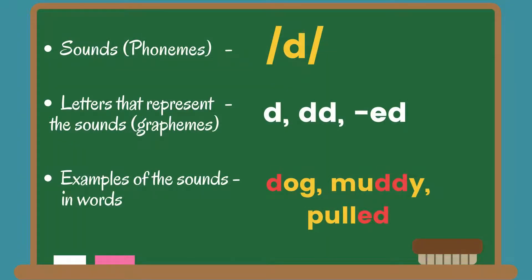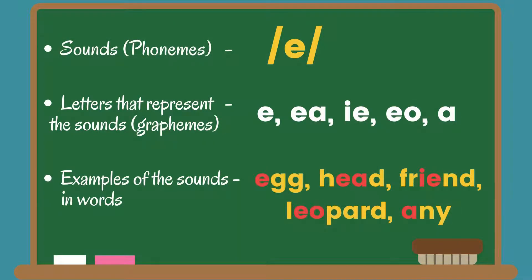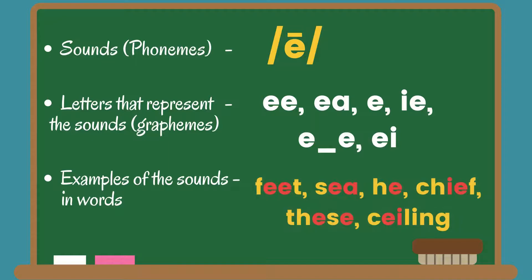D: Dog, Muddy, Pulled. E: Egg, Head, Friend, Leopard, Any. E (long): Feet, See, He, Chief, These, Ceiling.